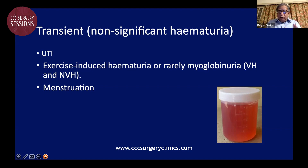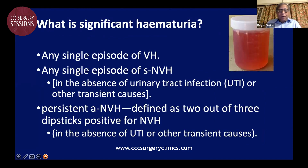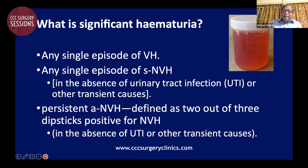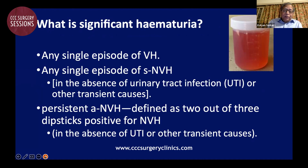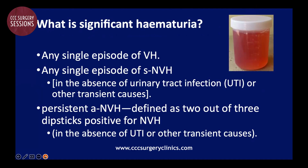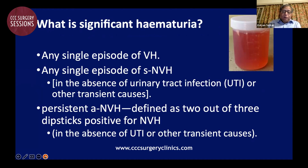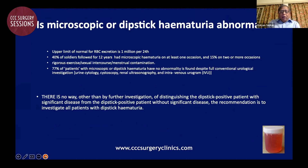All transient causes of hematuria should be excluded before calling hematuria significant. Any single episode of visible hematuria is significant, as is any single episode of symptomatic non-visible hematuria in the absence of transient causes including UTI. Persistent asymptomatic non-visible hematuria is defined as two positive results for non-visible hematuria in the absence of UTI and other transient causes.